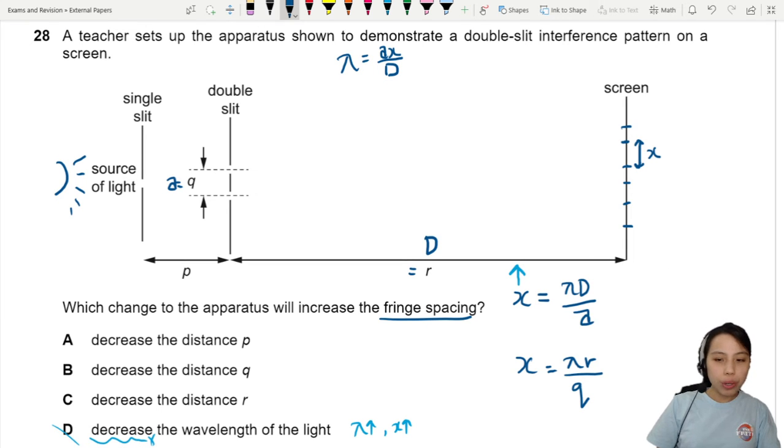That's better. So let's check option A. Decrease the distance P. Does that affect anything? There is no effect on our double slit pattern. So no.